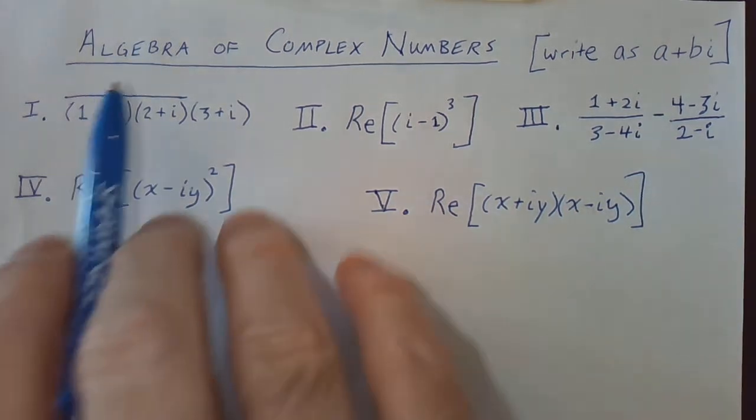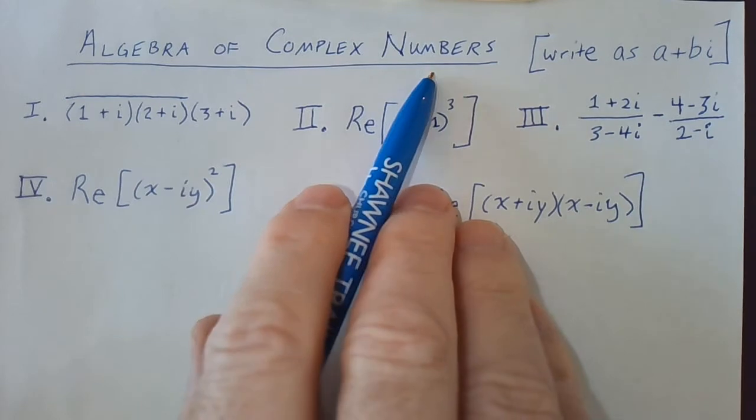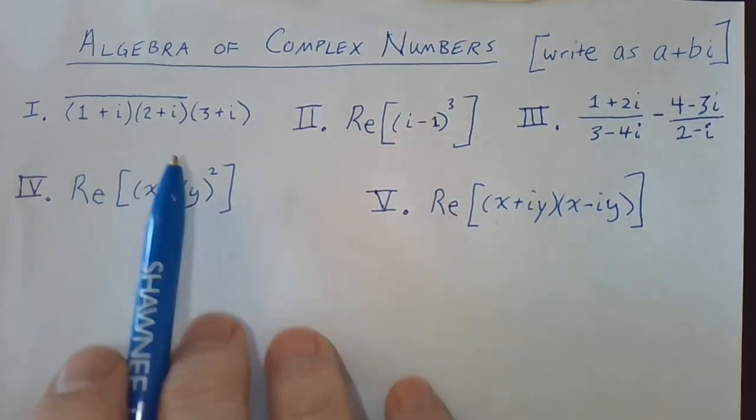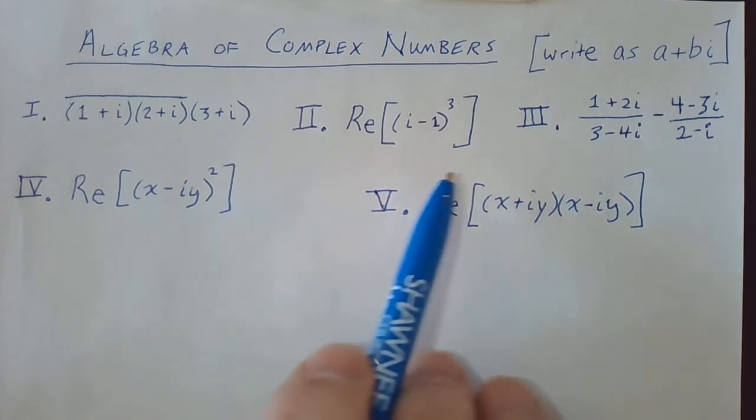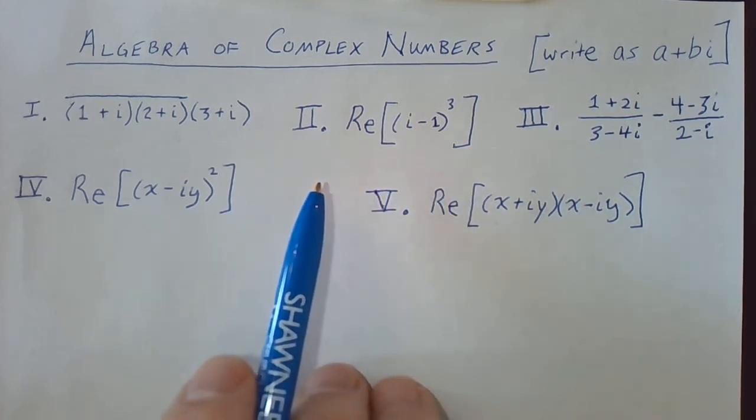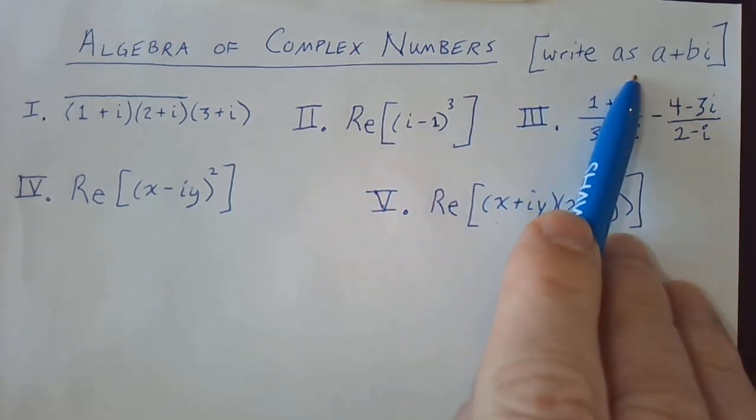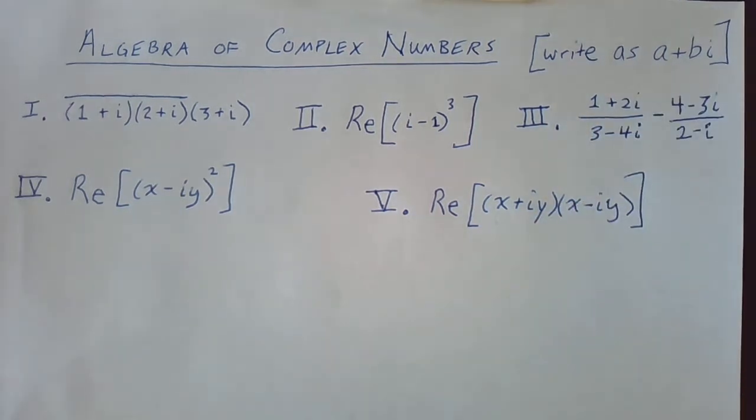In this video we're going to look at the algebra of complex numbers. We're going to look at five complex expressions, take each one, simplify it, and write it in the standard form a plus bi.